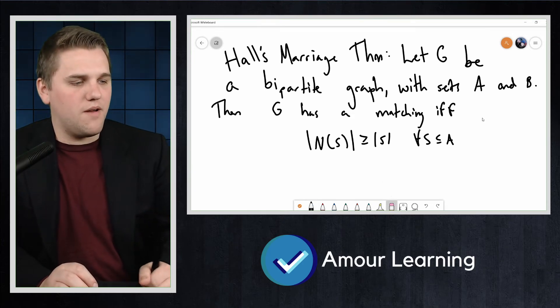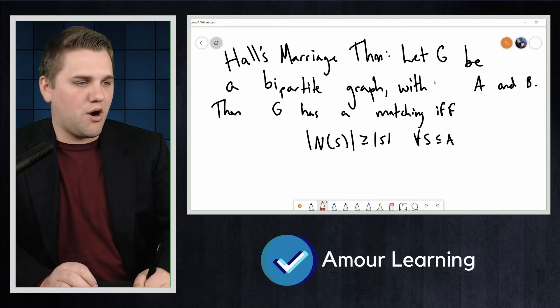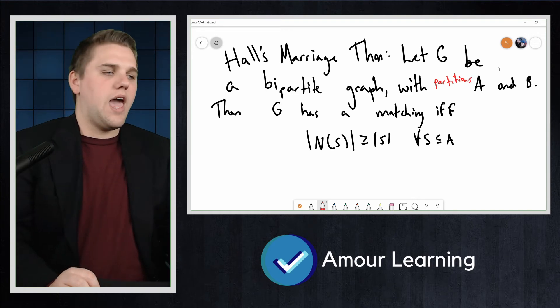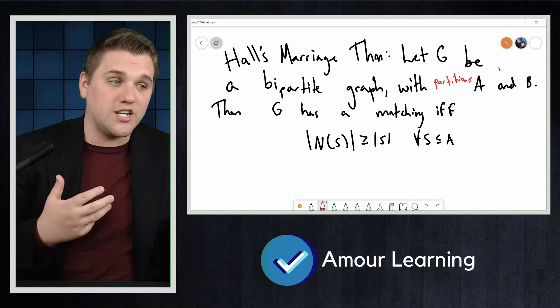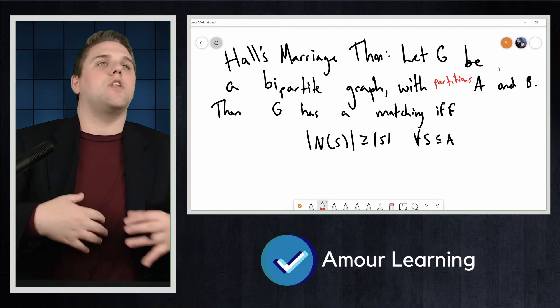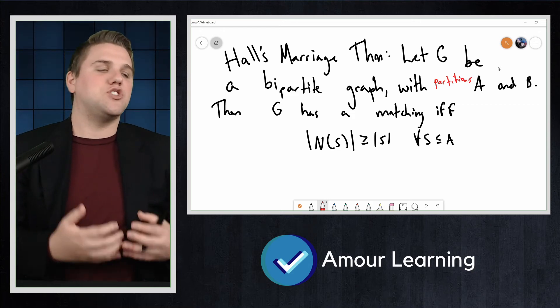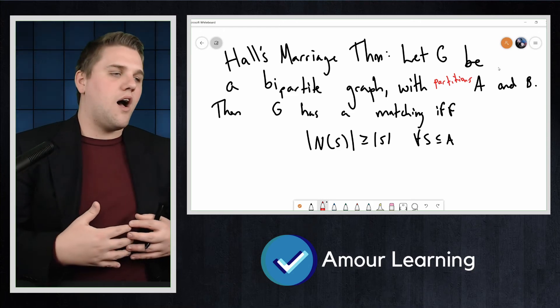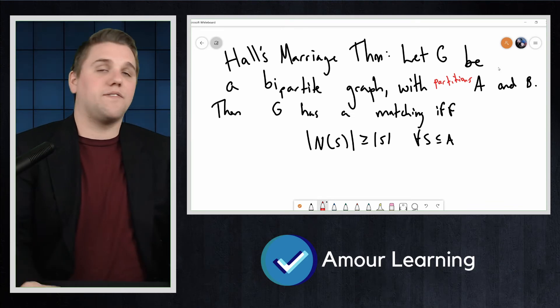Now I want to mention, I should be technically correct here by saying with partitions A and B, just to clarify what A and B represent within the context of the bipartite graph. But typically when you see someone talk about parts A and B with bipartite graphs, you can assume that those are those two sets where they're completely empty subgraphs.